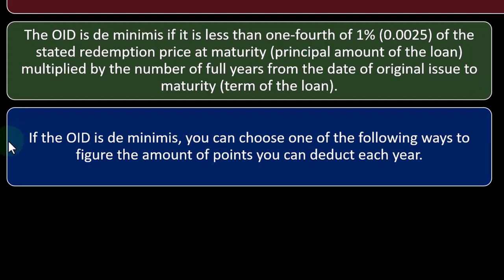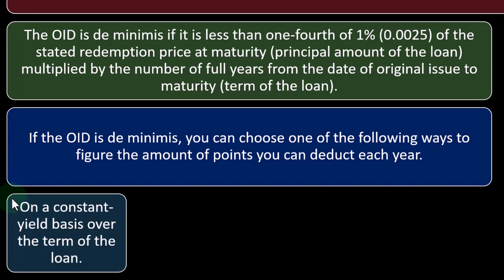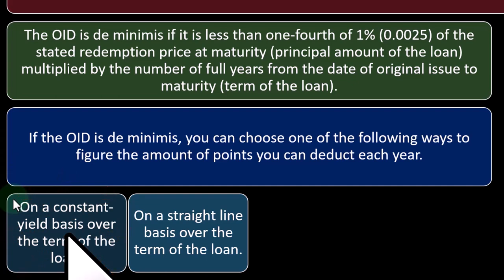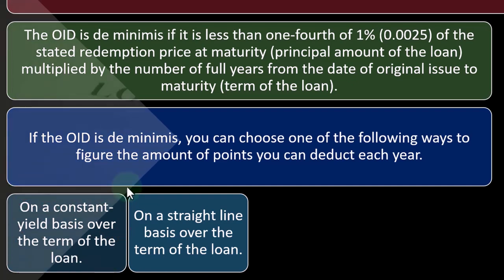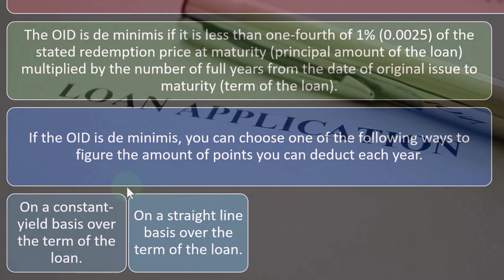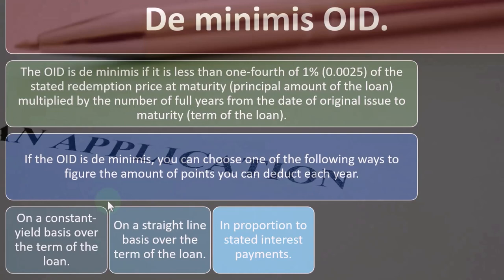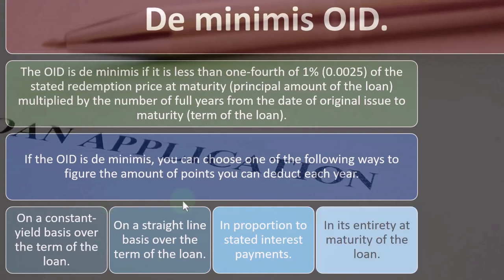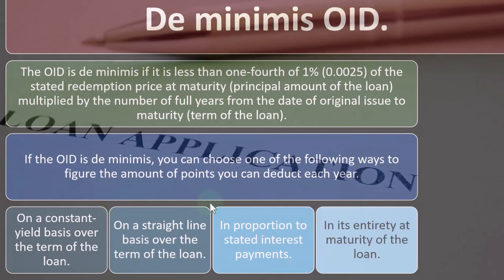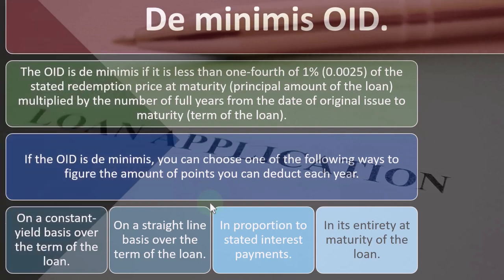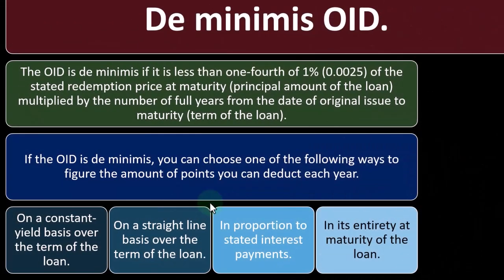So if the OID is de minimis, you can choose one of the following ways to figure the amount of points you can deduct each year: on a constant yield basis over the term of the loan, or on a straight-line basis over the term of the loan — the straight-line basis is clearly the easier method — or in proportion to stated interest payments.